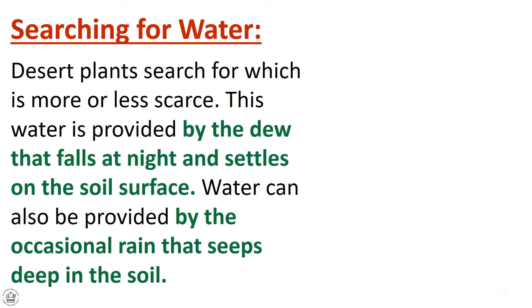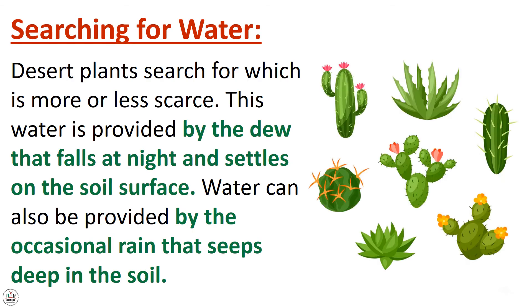Desert plants search for water, which is scarce. This water is provided by the dew that falls at night and settles on the soil surface. Water can also be provided by the occasional rain that seeps deep into the soil.